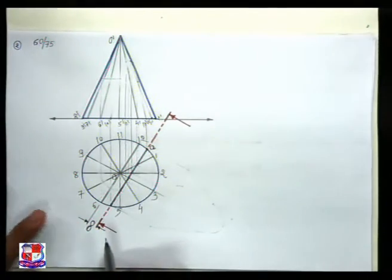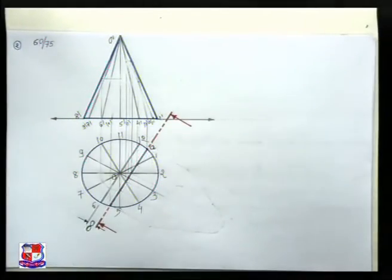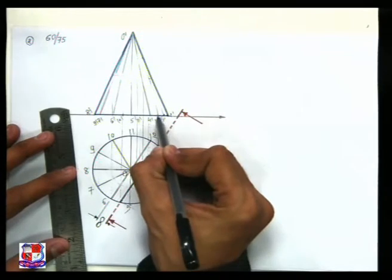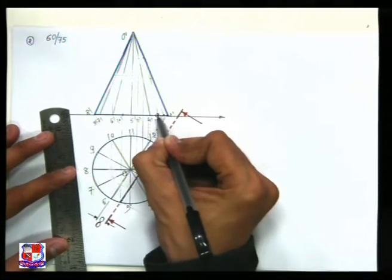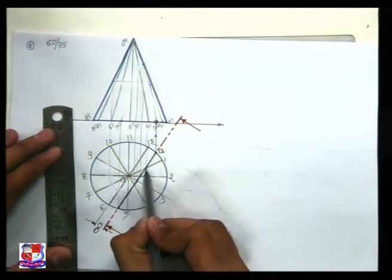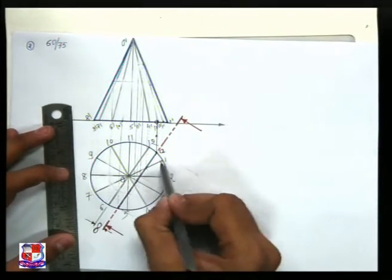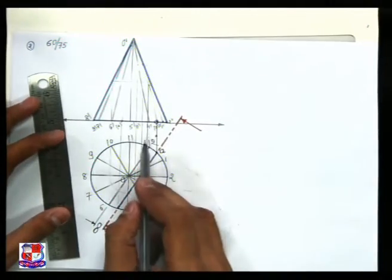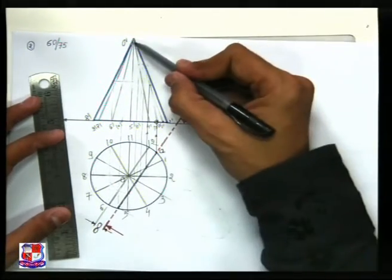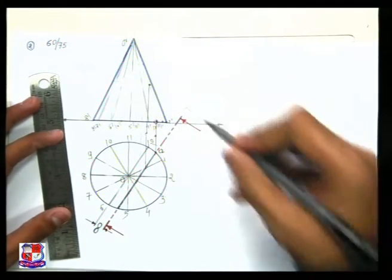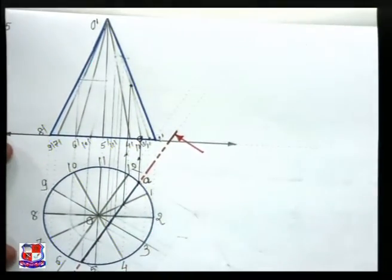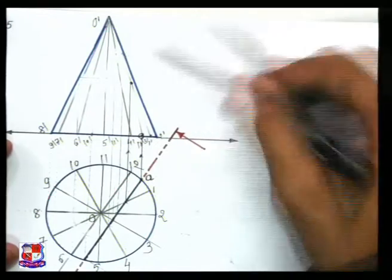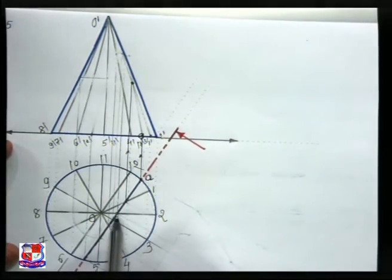Point A is on the base of this cone, so from this point draw a straight vertical line — point A — and it will cut the base at one point; that is the first point located in the front view. Now for generator O1: the intersection of the cutting plane and generator O1 is this point. From this point draw a straight vertical line, and this line will cut generator O dash one dash at one point — that is this point. Name it accordingly.